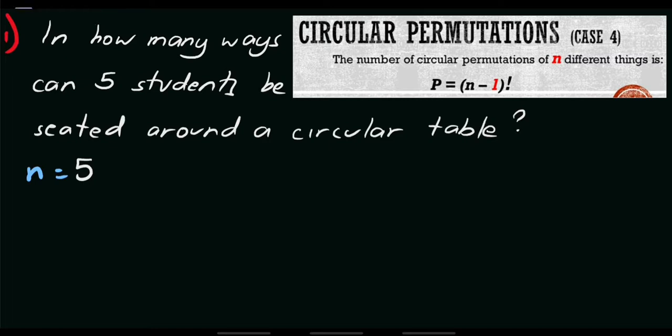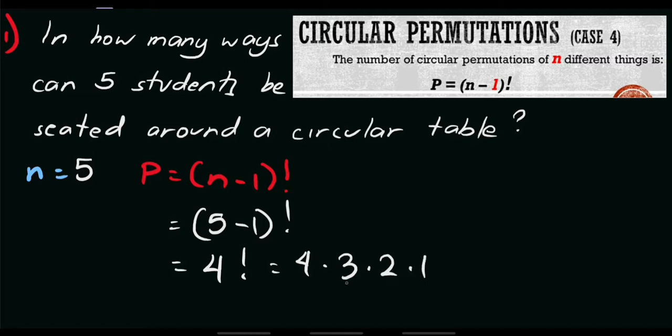After that, just use our formula. Again, our formula is P equals N minus 1 factorial. So that's the simplest formula. Let's substitute the value of N and simplify. So we have N as 5 minus 1 factorial. This equals 4 factorial, and 4 factorial equals 4 times 3 times 2 times 1. So by simplifying this, the answer is 24. So for this given problem, we have 24 distinguishable permutations.